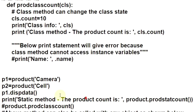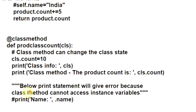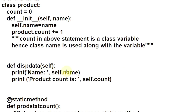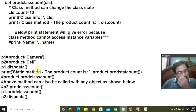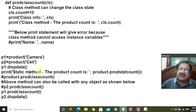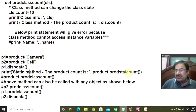You invoke DispData, which is the instance method, through P1. The output: name is 'camera', product count is 2 — because changes to the class attribute are visible in all instances. Now you invoke the static method. I have written the text 'static method' so we know which output comes from the static method and which comes from the class method.